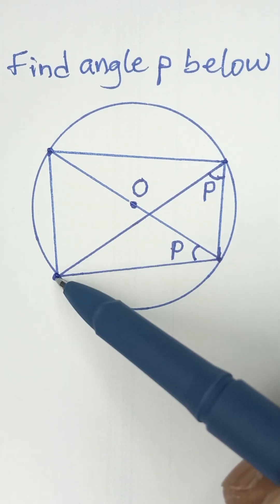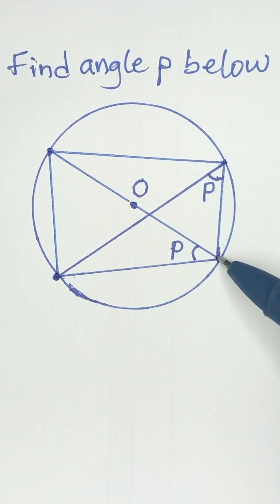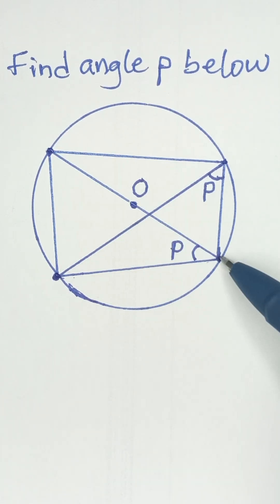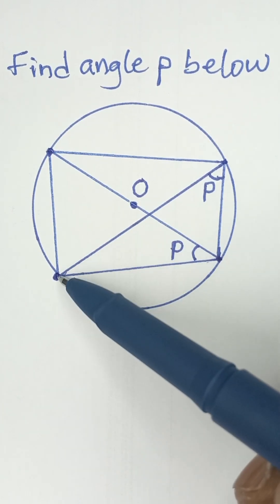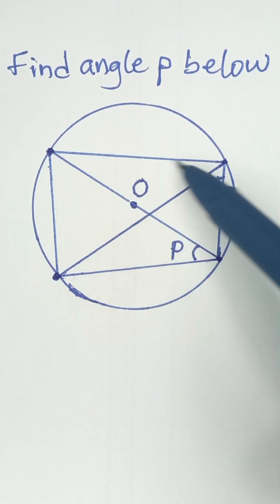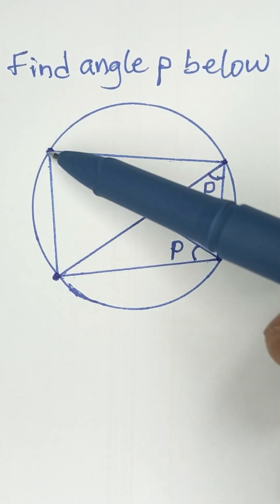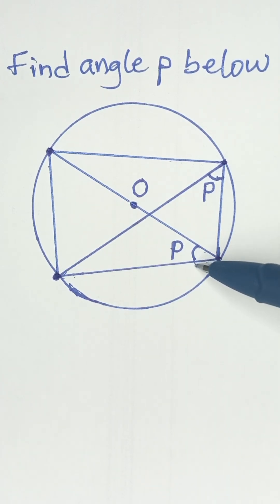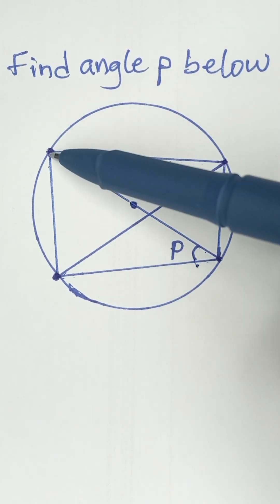Now this line comes from this point and goes to the circumference. This line also comes from this point and goes to the circumference. From the same point I have another line that goes to the circumference and another line that goes to the circumference. So it's like this chord now sustains an angle P at this point.